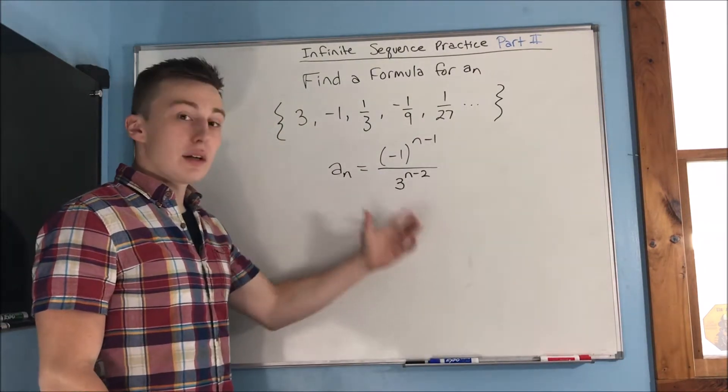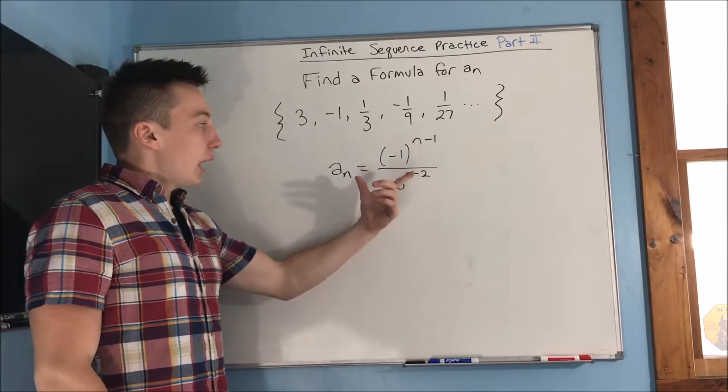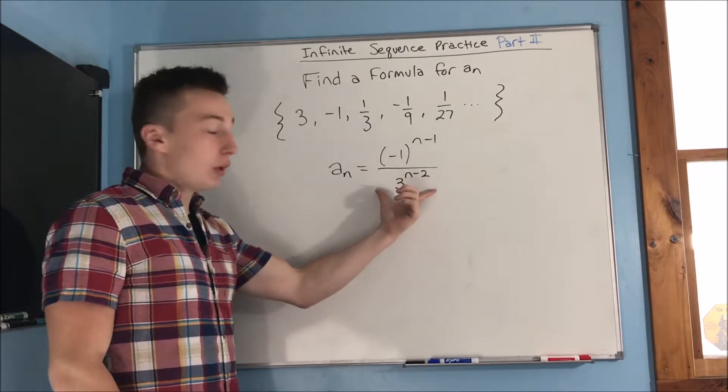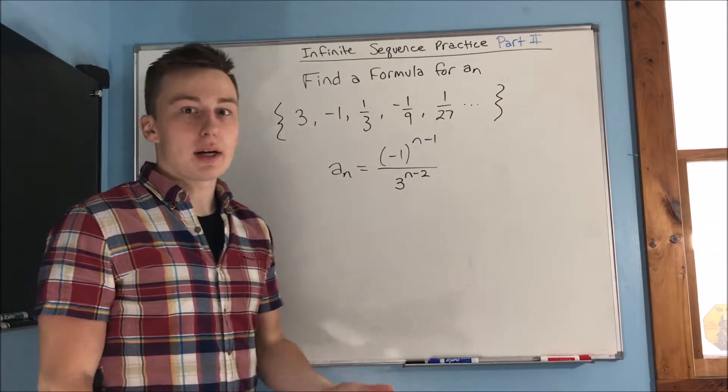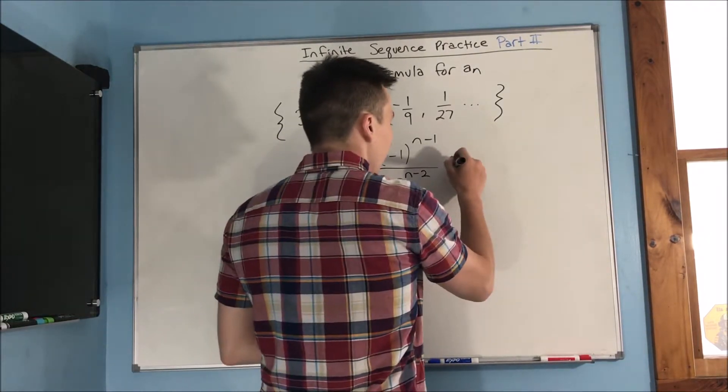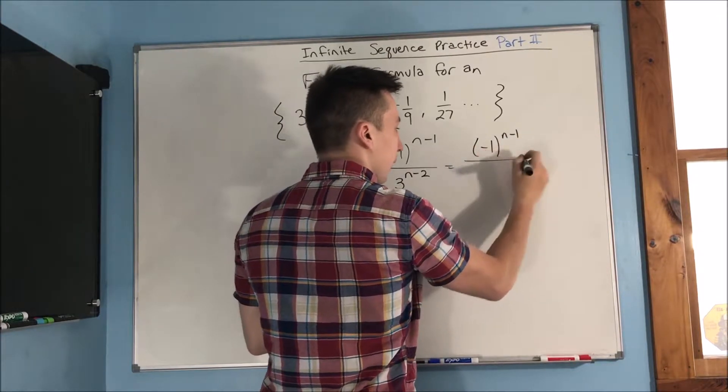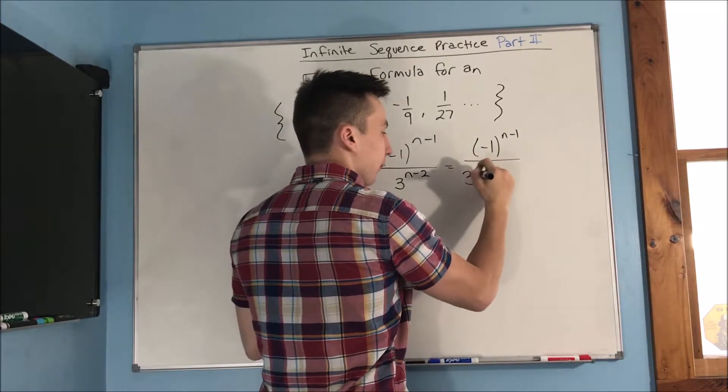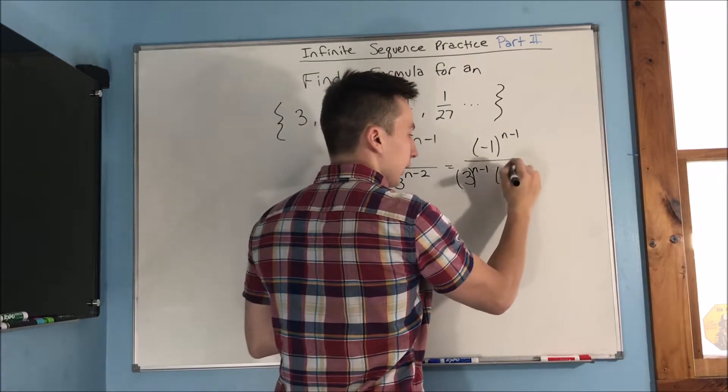Now we're not going to be done yet here because we can actually simplify this by making a three to the n minus one here and then we can combine that with the negative one that's on the top and that's also to the n minus one power. What I mean by that is we can split this up. We have a negative one to the n minus one and we split that three up to be a three to the n minus one and a three to the negative one.